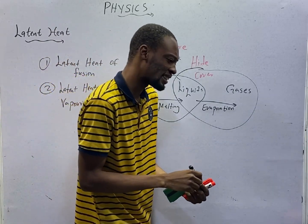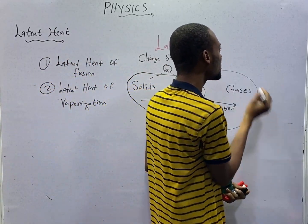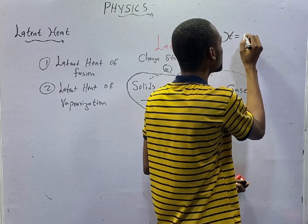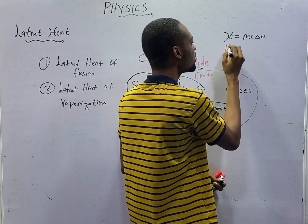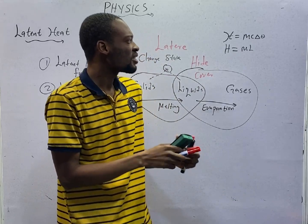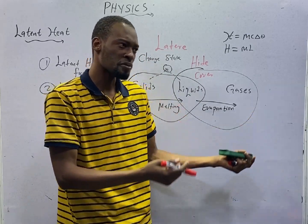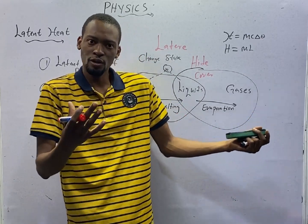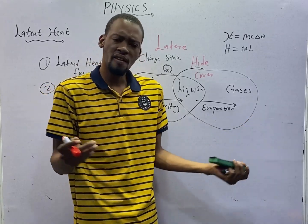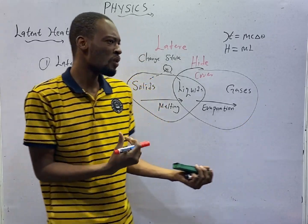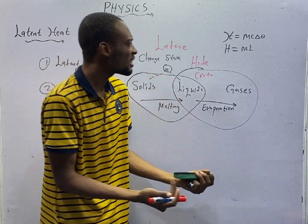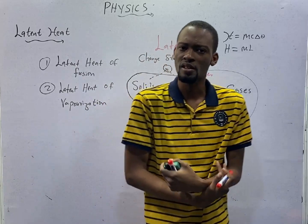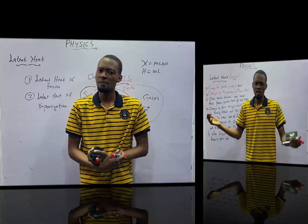So when you are dealing with latent heat, you don't see change in theta like you saw earlier that heat equals mc times change in theta. No. For latent heat, the heat is equal to mL. Latent heat changes the density of a substance and can change the volume of a substance, but the mass remains the same. Whether the substance is in solid or liquid state, the mass remains the same. So latent heat does not change the mass of a substance and it does not change the temperature.